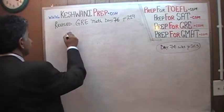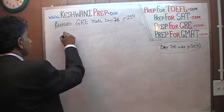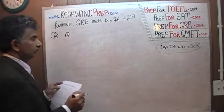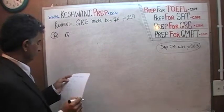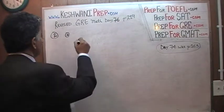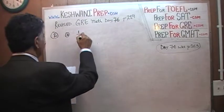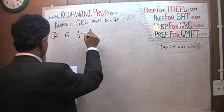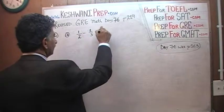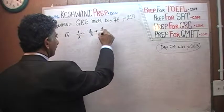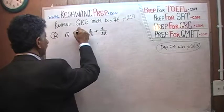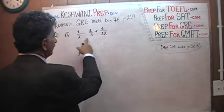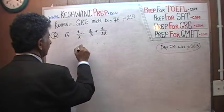We are doing problem number 2 — we did problem number 1 yesterday. Part A: one half minus one third plus one twelfth. We need to find the least common denominator. The least common denominator of these numbers is 12.